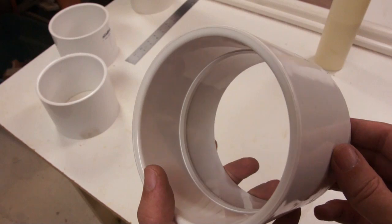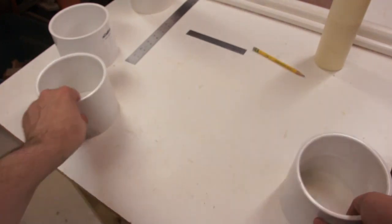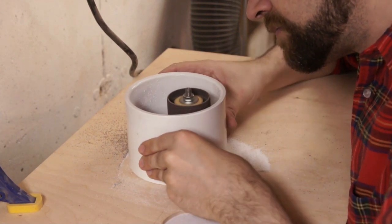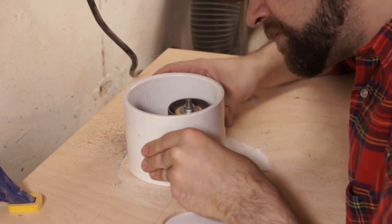The couplings have a rib in the middle and they're also tapered, so I use the spindle sander to get rid of that rib and flatten it on the inside.